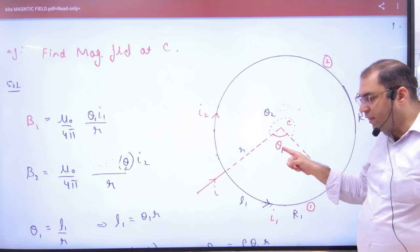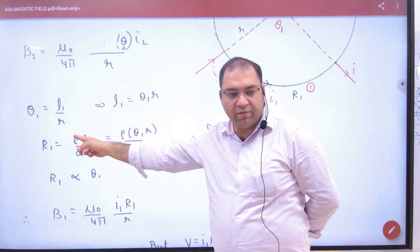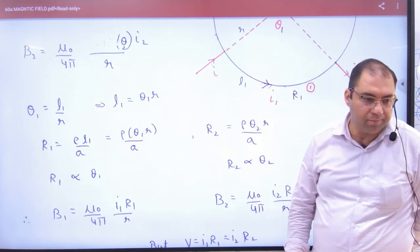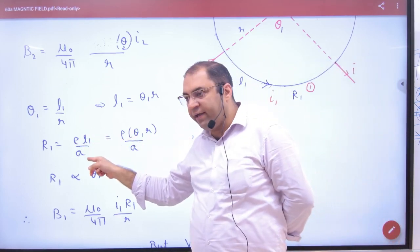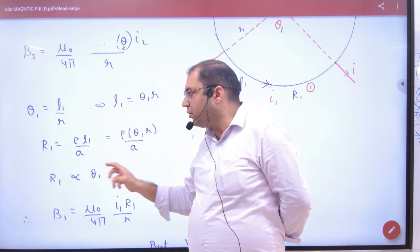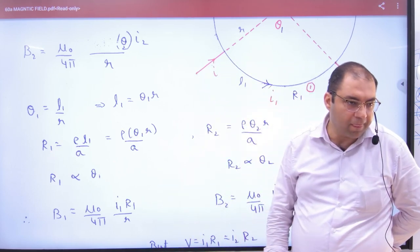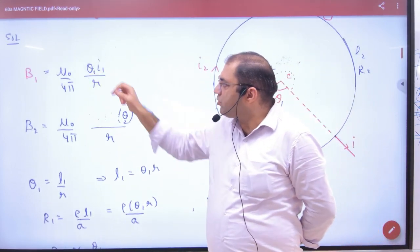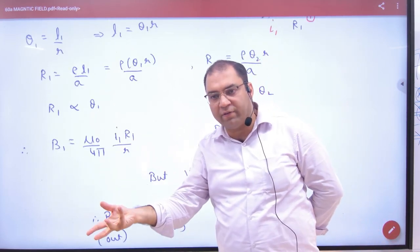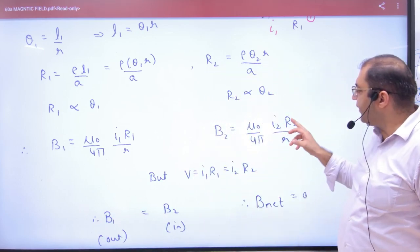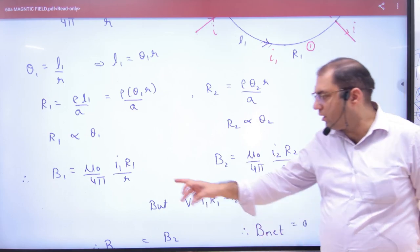Next is, angle is R by radius. Theta 1 is R by radius. So L1 is theta 1 into R. The resistance of R1 is R1. What is the formula? Rho L by A. The length of L1 is theta 1 R. The value of resistance is directly proportional to theta 1. So you can do this. The theta 1 here, you can replace it. Because theta 1 is proportional to R1. Similarly, what can we replace with theta 2? R2.